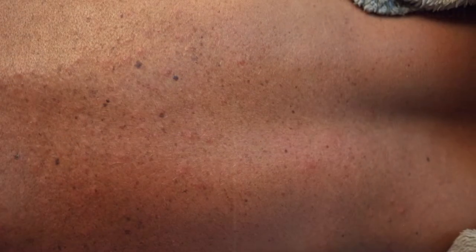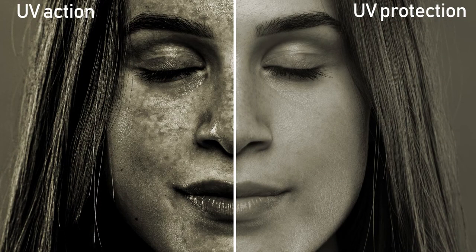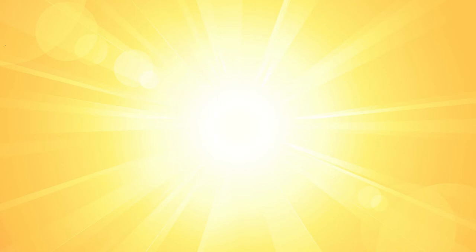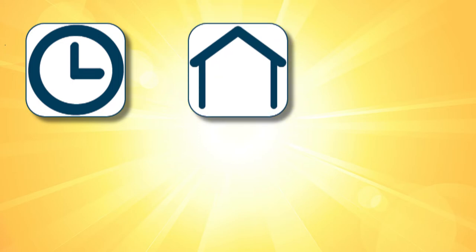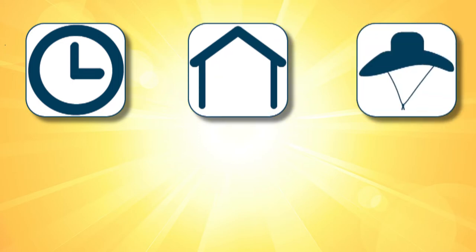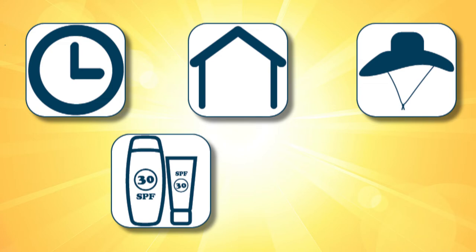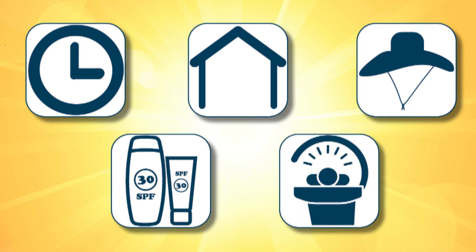The best defenses against skin cancer are preventing overexposure to UV rays and the use of screening and regular skin exams. There is no such thing as a safe, healthy tan — tan skin is damaged skin. You can limit your UV exposure by limiting your time in the sun, especially between 10am and 4pm, seeking shade whenever possible, wearing clothing that protects you from the sun such as a wide-brimmed hat, wearing broad-spectrum water-resistant sunscreen with at least SPF 30 every day even when it is cloudy, reapplying sunscreen every two hours or after sweating or going in the water, and avoiding tanning beds and sun lamps.